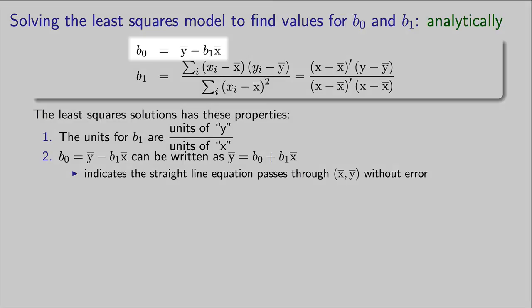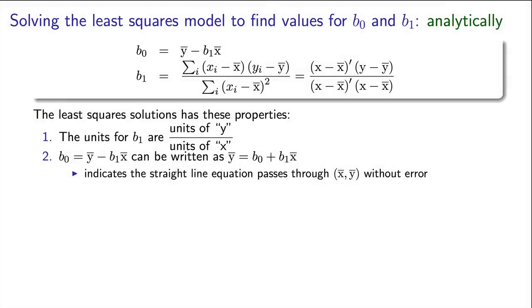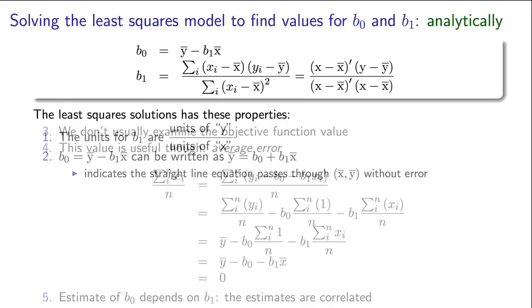The other important point that we notice is, by a small rearrangement of this first equation, we can quickly prove that the least squares model always passes through the points x-bar and y-bar with no error. That artificial point, x-bar and y-bar, will lie exactly on the least squares line, right in the middle of the data.